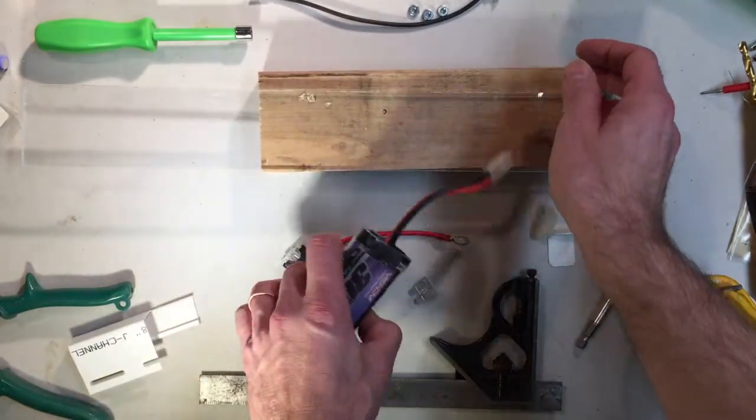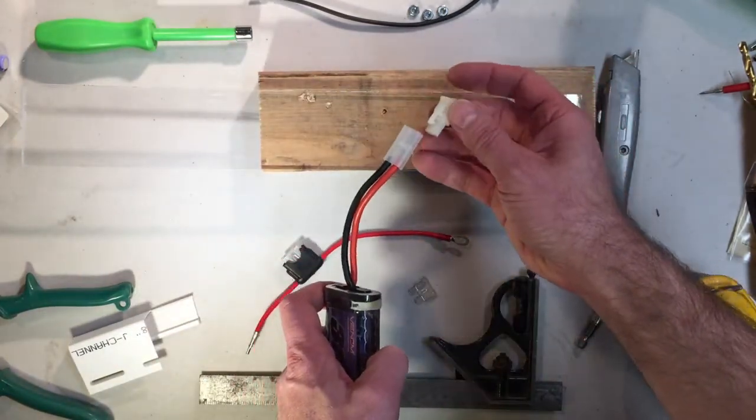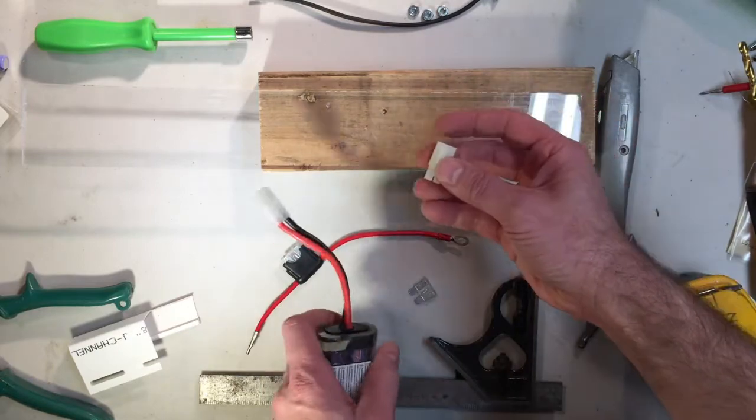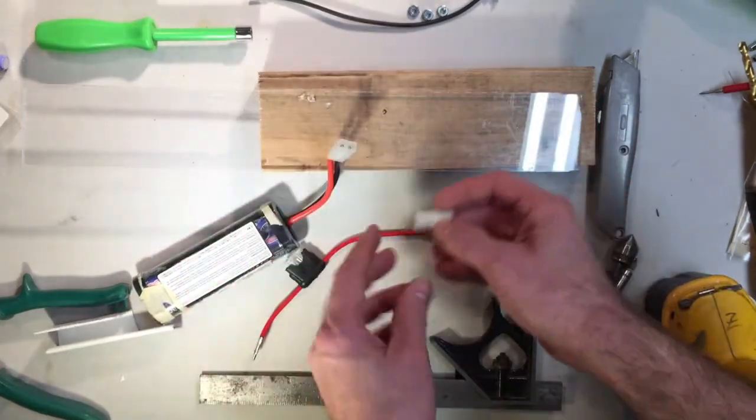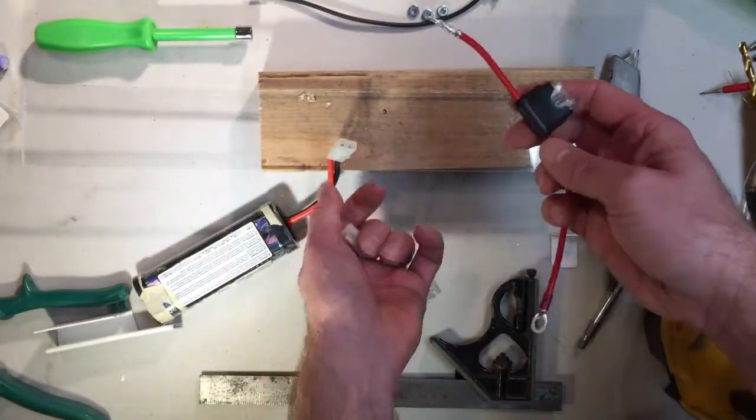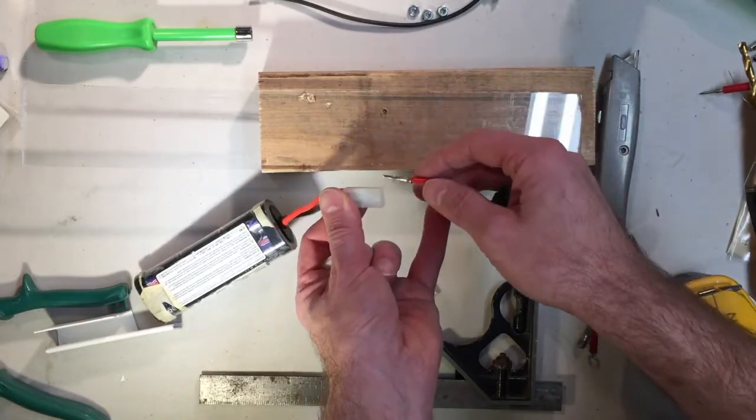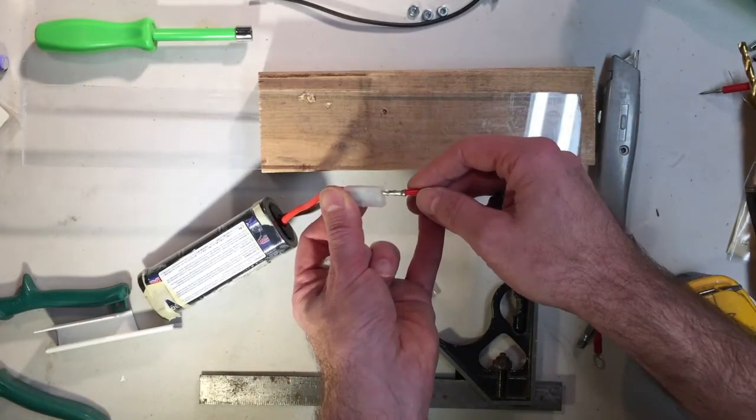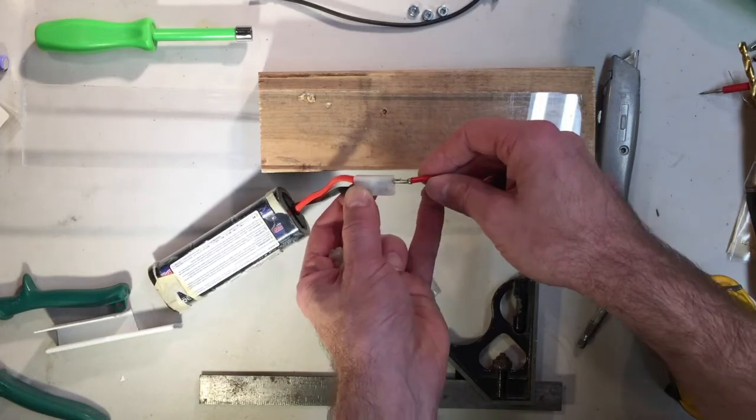So first thing I did was I got the mating connector to the battery right here. And it has the plastic piece and also the pins that make the electrical contacts. These pins plug into the battery pins right there, make contact.